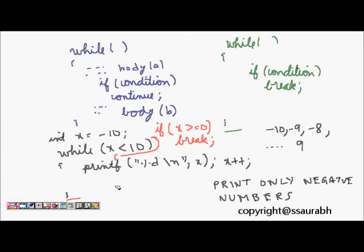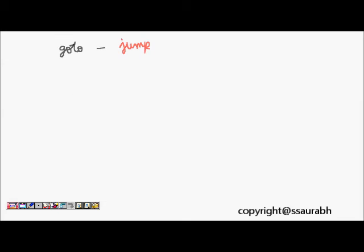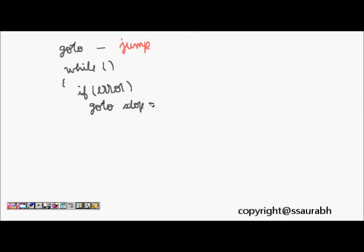This is about the break statement which exits the loop. The last thing we are going to see is goto. Goto is a kind of jumping — it tells the compiler to jump to some position. For example, in a while loop: if some error occurs, I write goto stop, where stop is a label. Afterwards, at the stop label there is a piece of code which will be executed. This is about the goto statement.